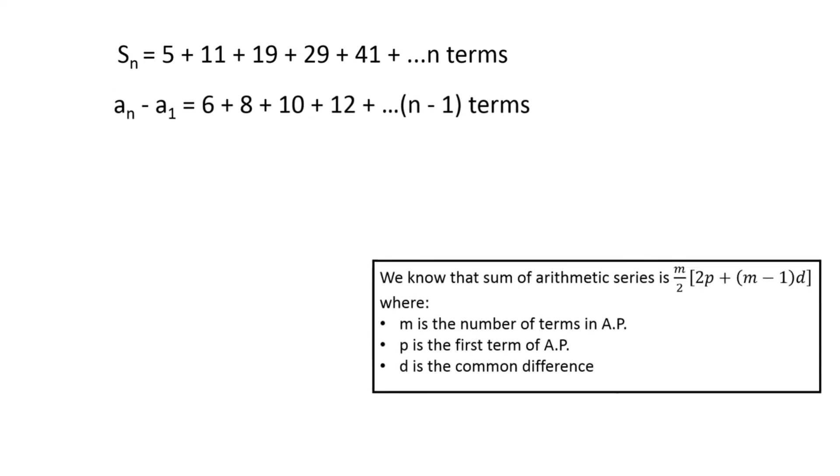We know that the sum of the arithmetic series is m by 2 times [2p plus (m minus 1) times d], where m is the number of terms in AP, p is the first term of AP, and d is the common difference between consecutive terms.